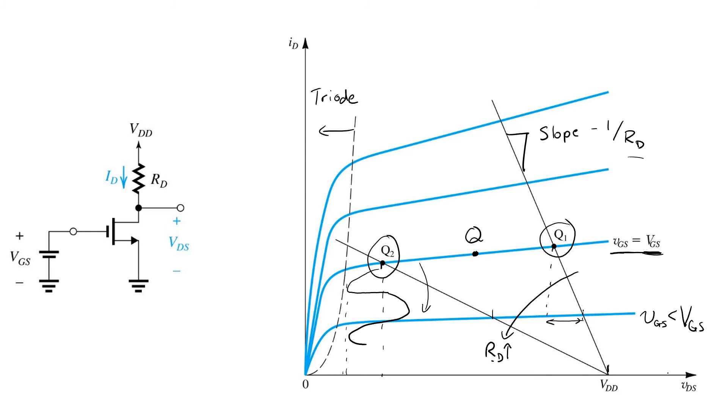If you favor larger voltage swing, then you might select your operating point somewhere around the middle of this range. A higher gain would suggest that you may want to bias the transistor closer to the verge of triode.